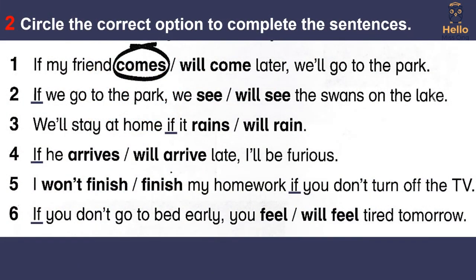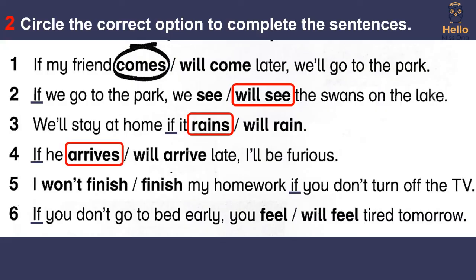Activity 2: Circle the correct option to complete the sentences. 1. If my friend comes later, we'll go to the park. 2. If we go to the park, we will see the swans on the lake. 3. We'll stay at home if it rains. 4. If he arrives late, I'll be furious. 5. I won't finish my homework if you don't turn off the TV. 6. If you don't go to bed early, you will feel tired tomorrow.